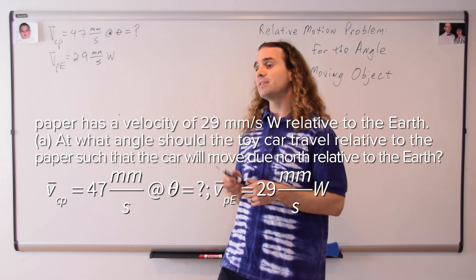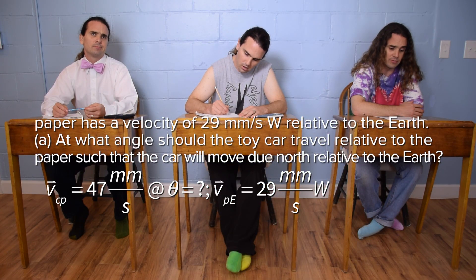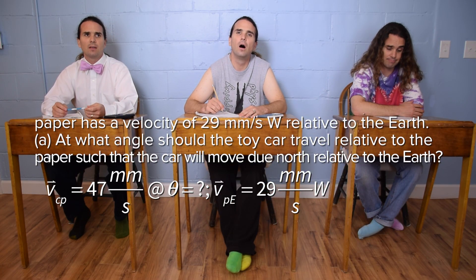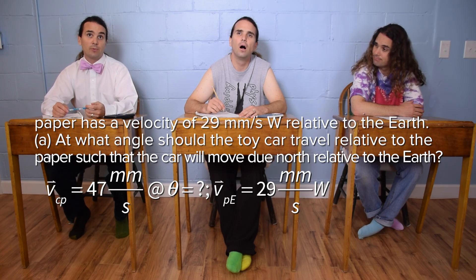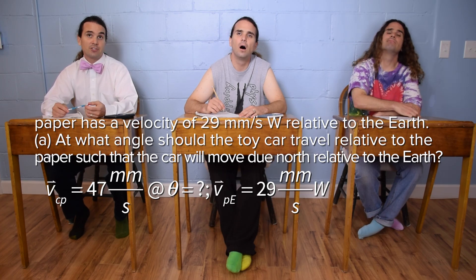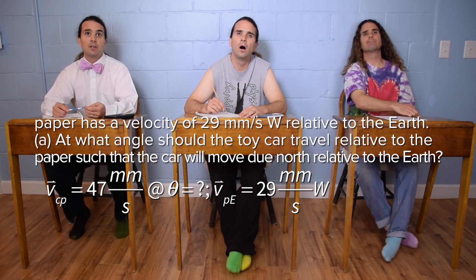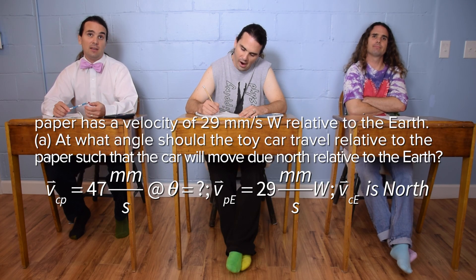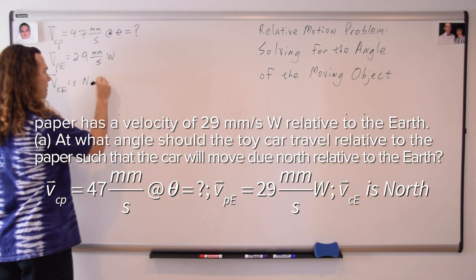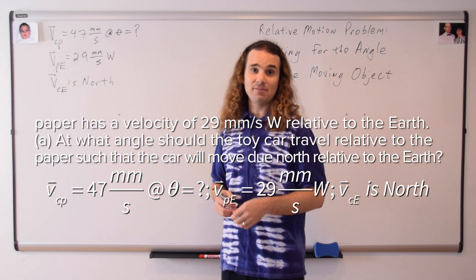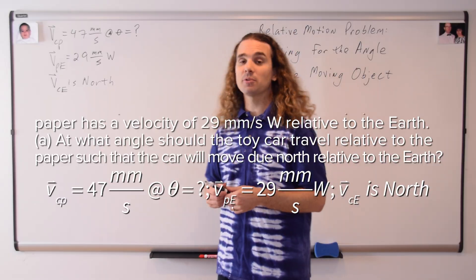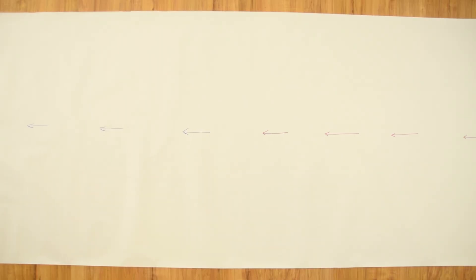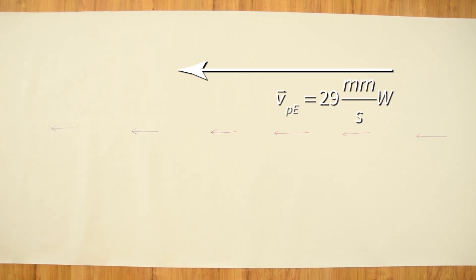Bo, please continue. Such that the car will move due north relative to the earth. All that we know about the velocity of the car with respect to the earth is its direction: north. So v sub c-e is north. Now that we have all the givens, let's visualize the problem. Let's start with the paper, which is the only vector for which we know both the magnitude and direction.